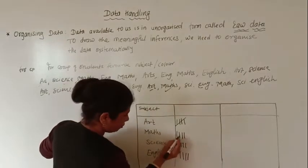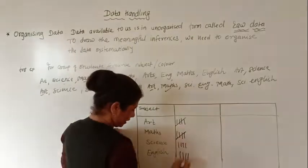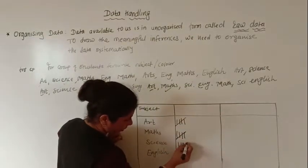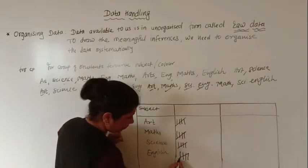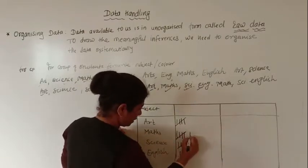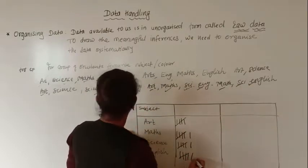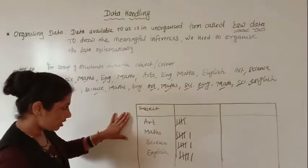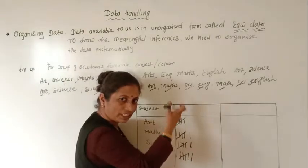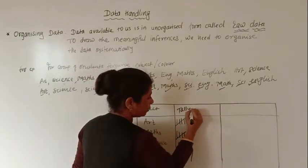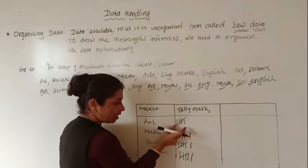Now after maths — maths has 1, 2, 3, 4. Science is already at 1, 2, 3, 4. English will complete 5, then again maths, maths, maths, science, English. We have arts, maths, science, English all recorded with their tally marks. This marking of lines is called tally marks.